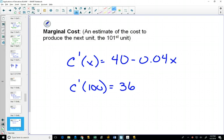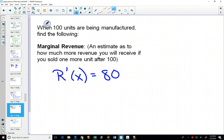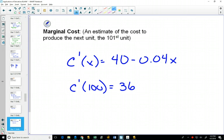I just used it for the 100th one because I wanted to find our question originally, when 100 units are being manufactured, find the following. So this is my equation for all my marginal costs. This is my specific marginal cost at 100. How much would it cost to produce one more? It'll cost me $36 to produce the 101st one.